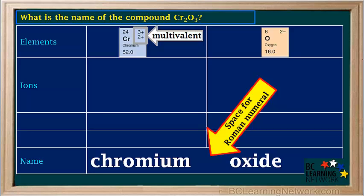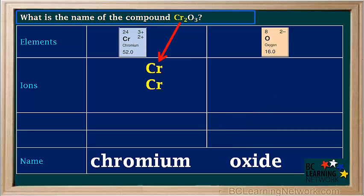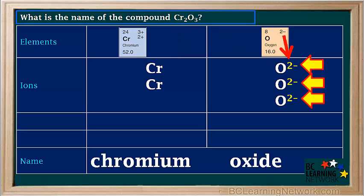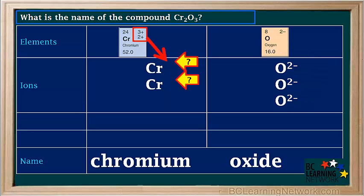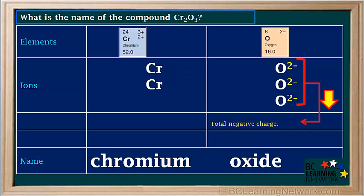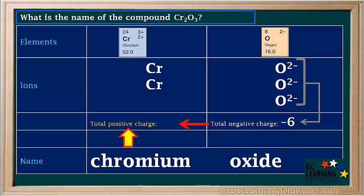So that's why we left a space after the name chromium, so we can put in the roman numeral once we know it. The formula tells us we have two chromium ions and three oxide ions. The periodic table tells us the charge on each oxide ion is negative two. We don't know whether we would need to use 3+ or 2+ for chromium, so we work backward from the oxygen. We find the total negative charge by adding up the charges on the three oxide ions: three times negative two equals negative six. Because the total positive charge and total negative charge have to add up to zero, the total positive charge must be equal to positive six.